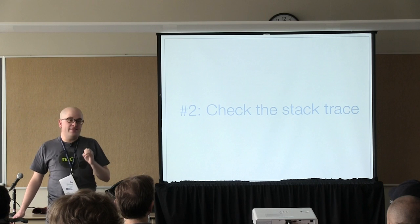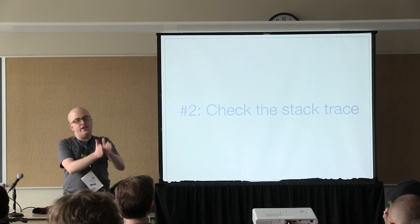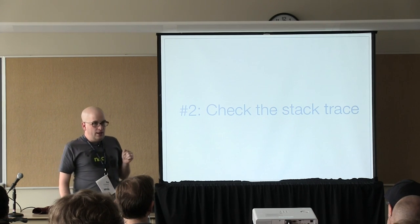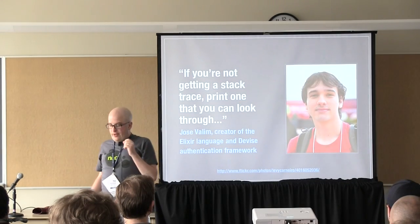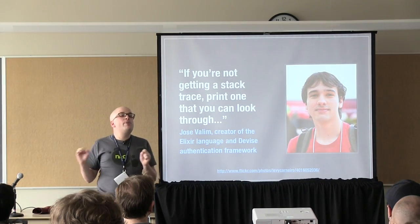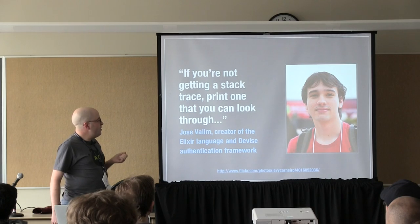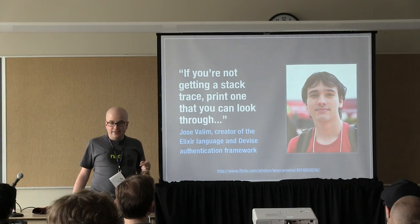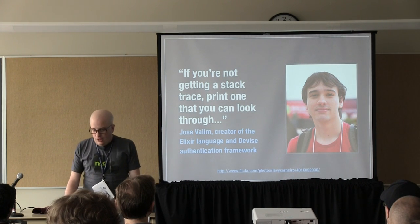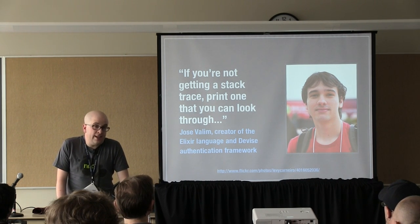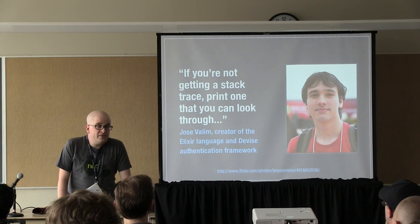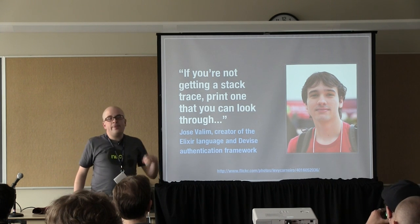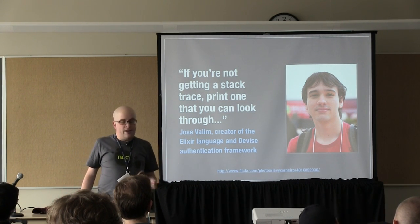There's other contextual information such as the stack trace — the list of all the method calls that led up to the error. Not all programming languages print this out. José Valim, a key member of the Ruby community who is also writing his own language called Elixir, gave this tip: if you're not getting a stack trace, print one out and read it through. It's really useful to see the path the interpreter took to get to the error. That context is incredibly helpful. And if you're a Java coder, print the whole thing out on paper, take it home, and read it overnight.